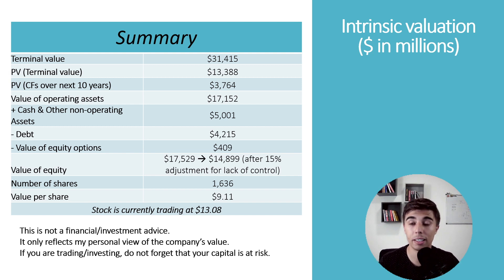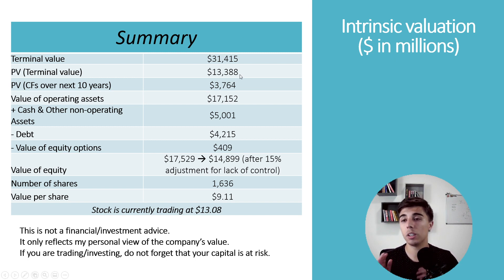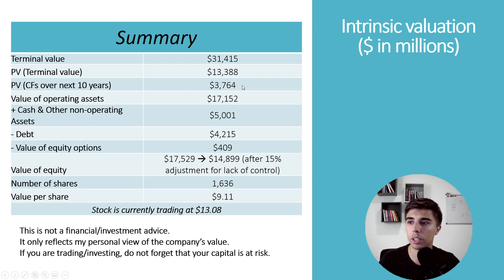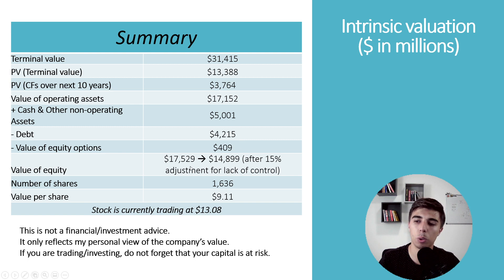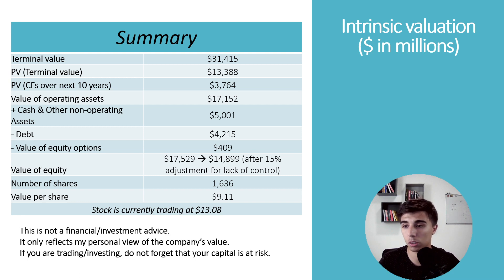The terminal value — the value of the company 10 years from now — is $31.4 billion, discounted to today: $13.4 billion. Until that point they'll generate cash flows with a present value of $3.8 billion. Adding those together gives $17.2 billion. Adding $5 billion in cash, subtracting the debt, and subtracting $400 million in outstanding equity options, we get to an equity value of $17.5 billion. But because there's a lack of control, I'm adjusting down 15%, giving a valuation based on my assumptions of $14.9 billion.